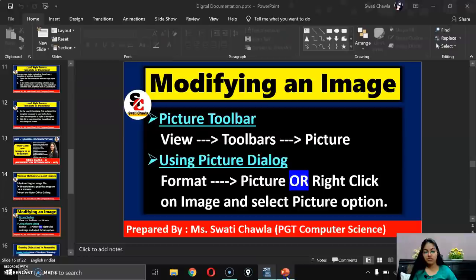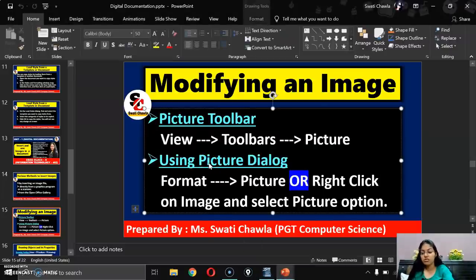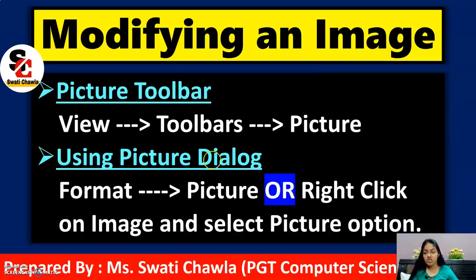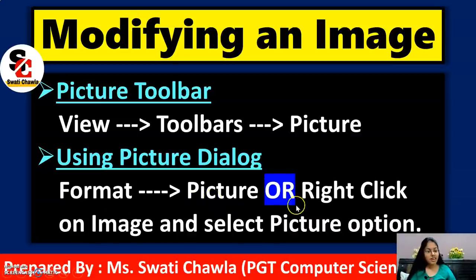The second method for modifying an image is using the Picture Dialog Box. To open the picture dialog box, click on the Format menu and then select the Picture option. You can also right-click on the image, or simply double-click on it.